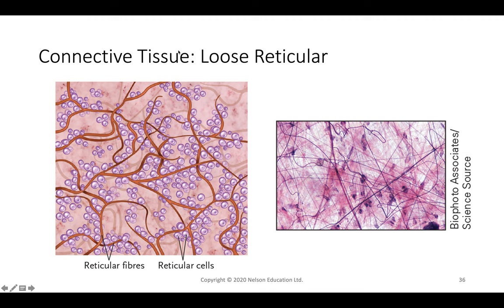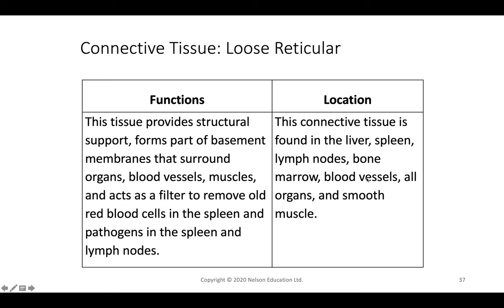Adipose tissue stores triglycerides to produce ATP for metabolism, insulates the body, and protects and cushions organs. It is found wherever there is areolar connective tissue, mainly in the sub-Q skin layer. Loose reticular connective tissue contains reticular fibers and reticular cells, found in the liver, spleen, lymph nodes, bone marrow, and smooth muscle. It serves as structural support, filters old red blood cells, and helps eliminate pathogens.